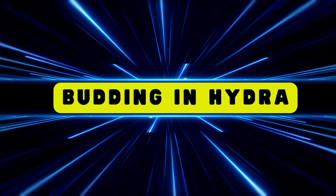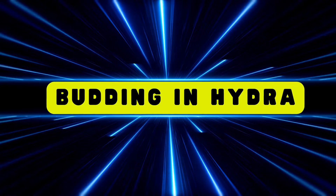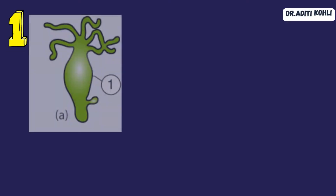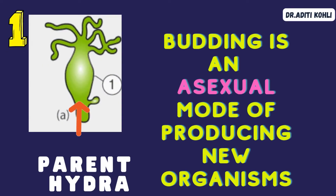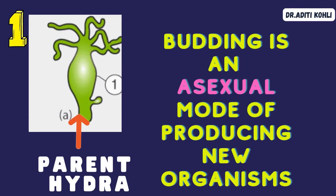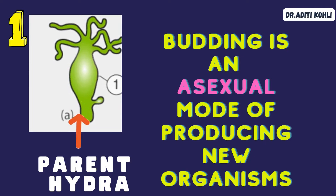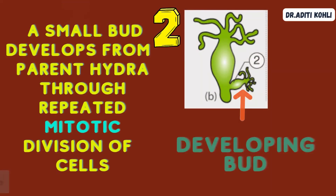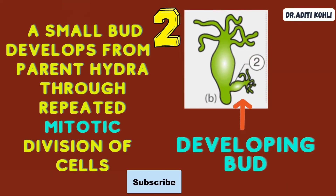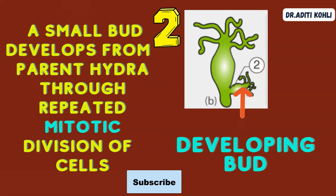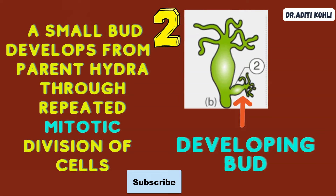Let us discuss budding in Hydra. Budding is an asexual mode of producing new organisms. A small bud develops from the parent Hydra through repeated mitotic division of cells.